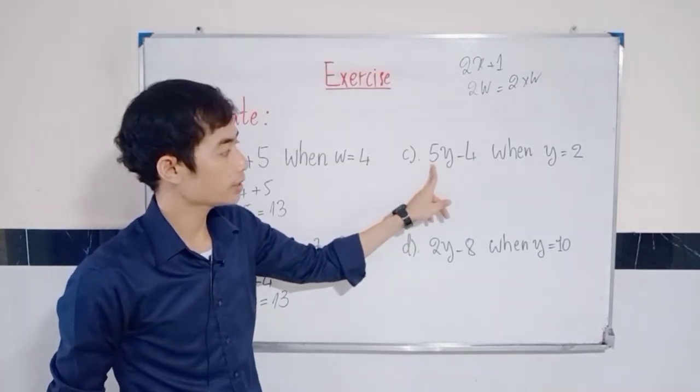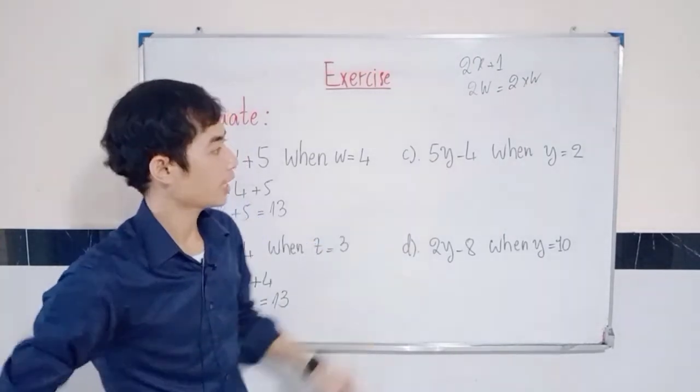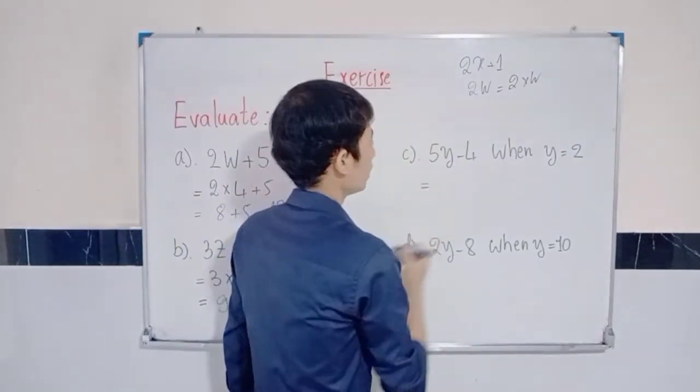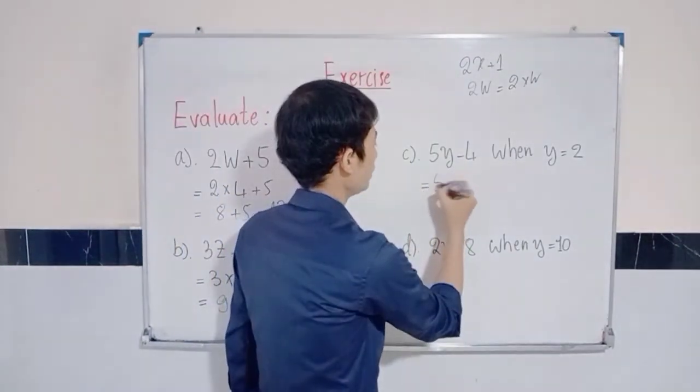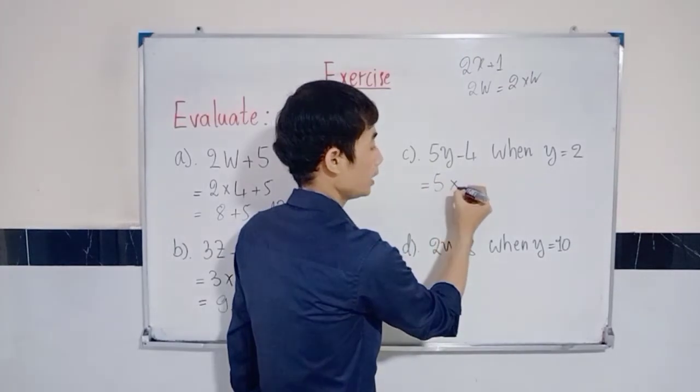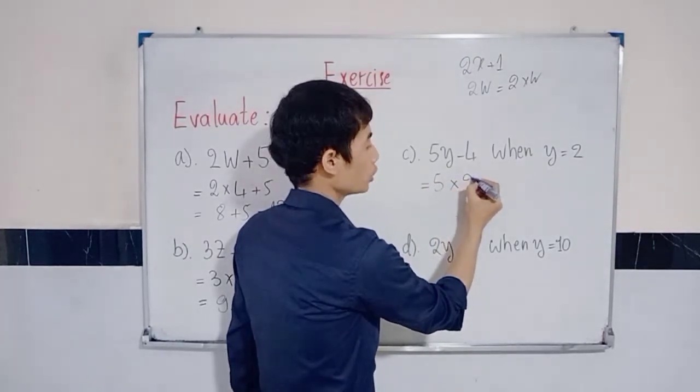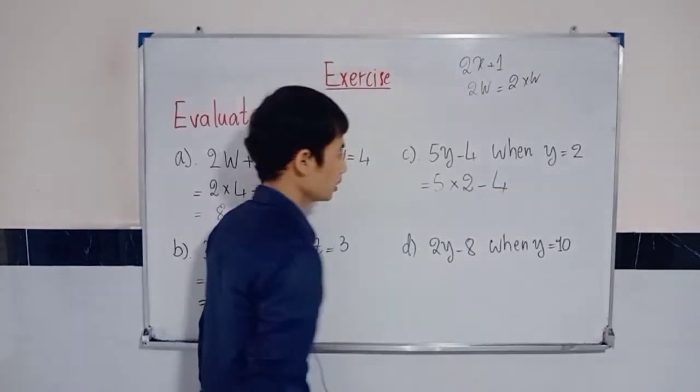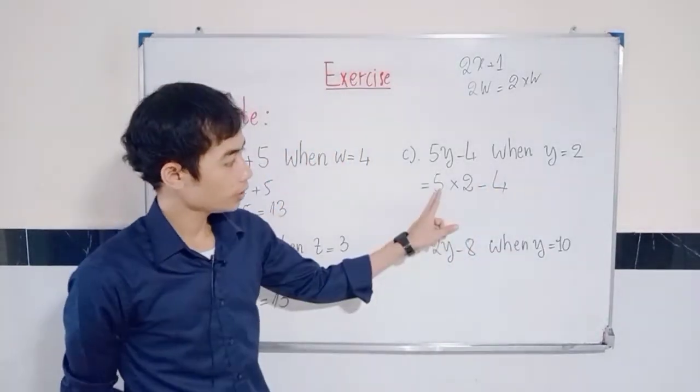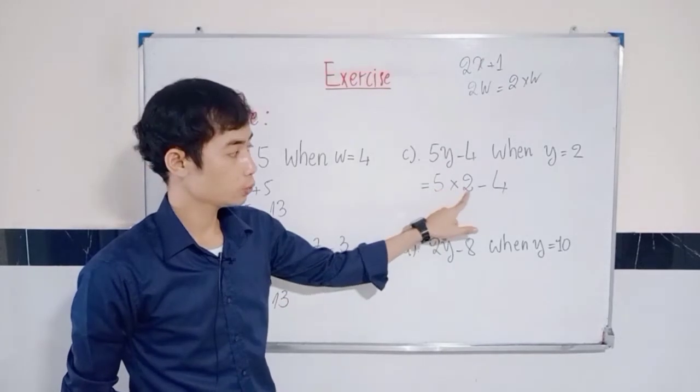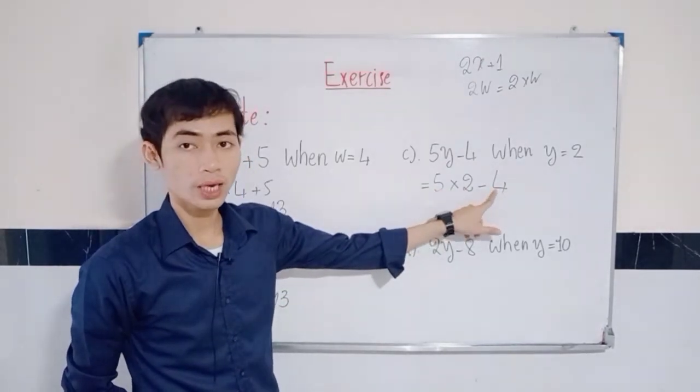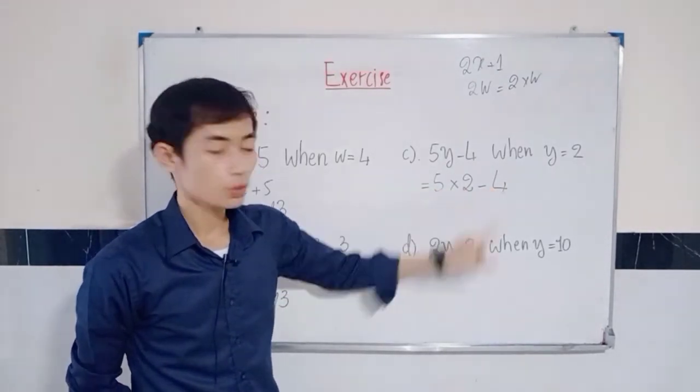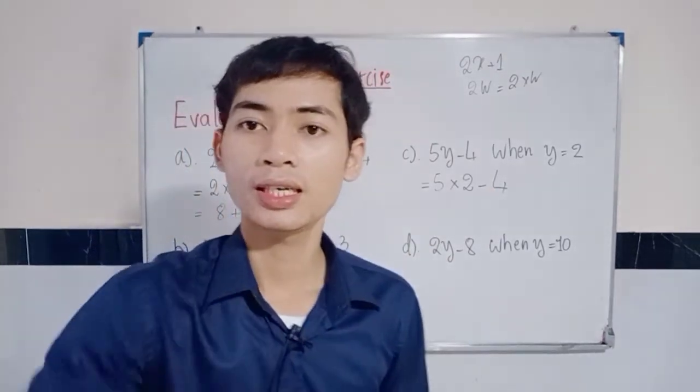5 times y. Then you can say 5 multiplied by 2 minus 4. We have 5 times 2 minus 4. You can take 5 multiplied by 2 first. So, 5 multiplied by 2 is 10.